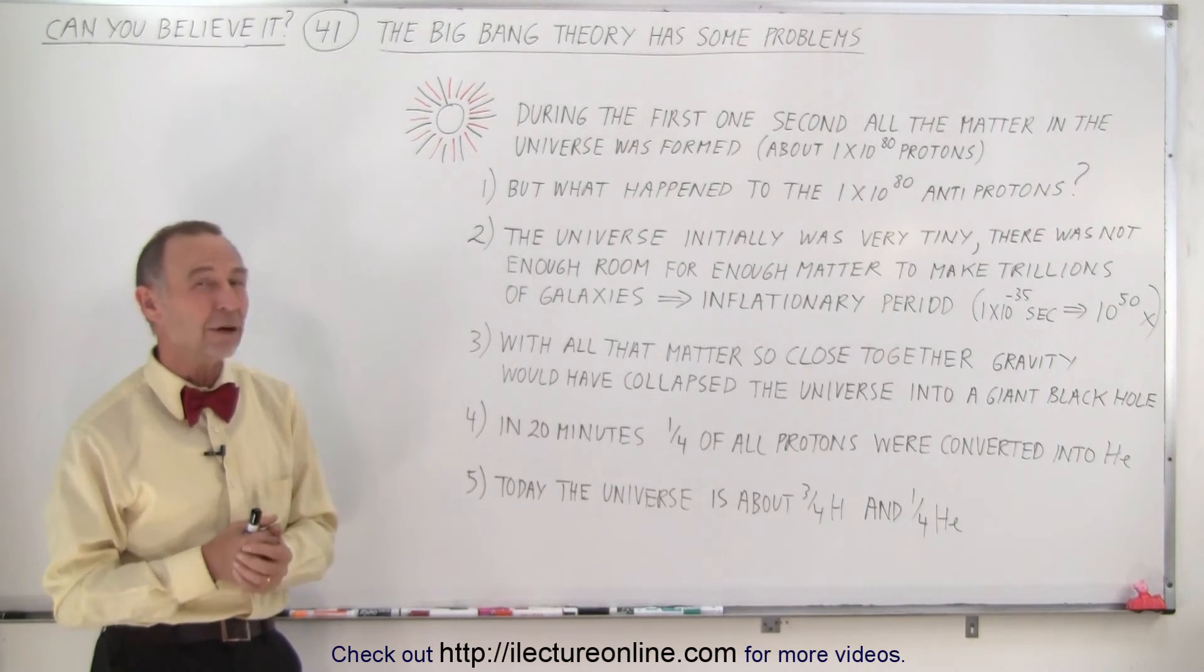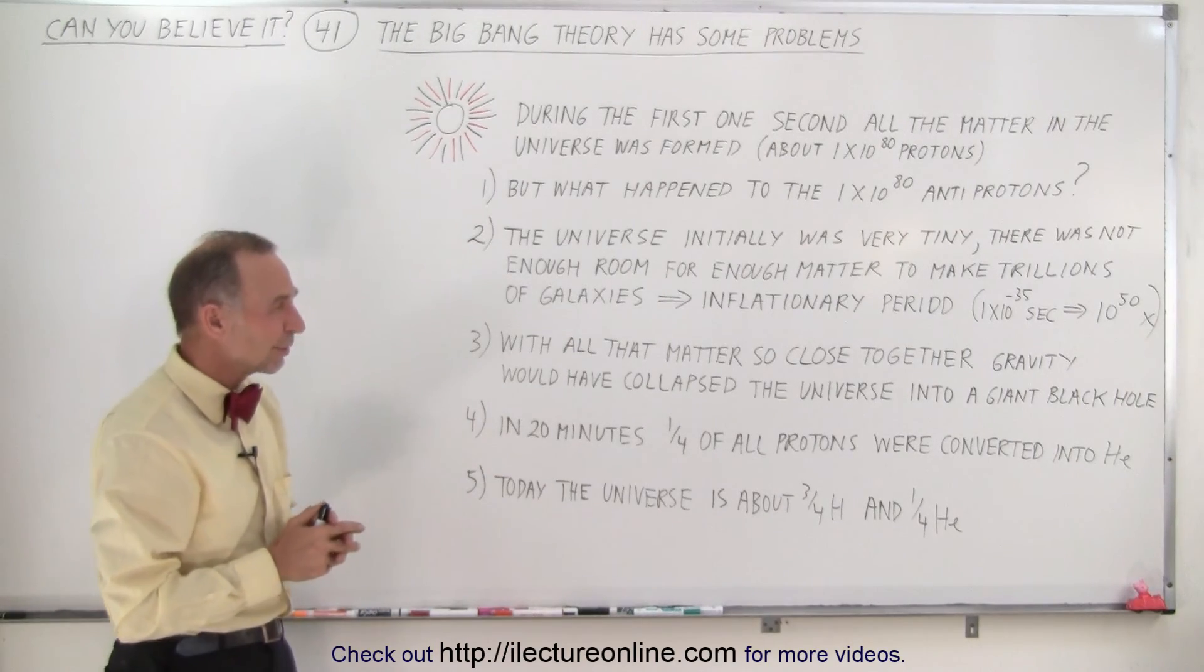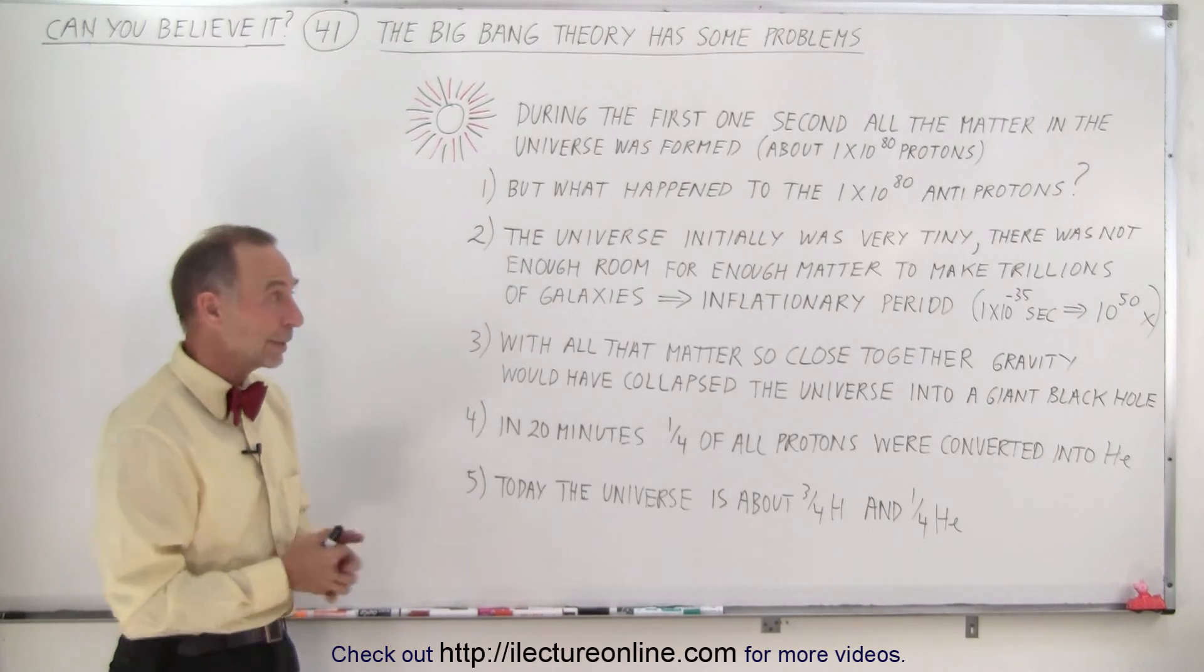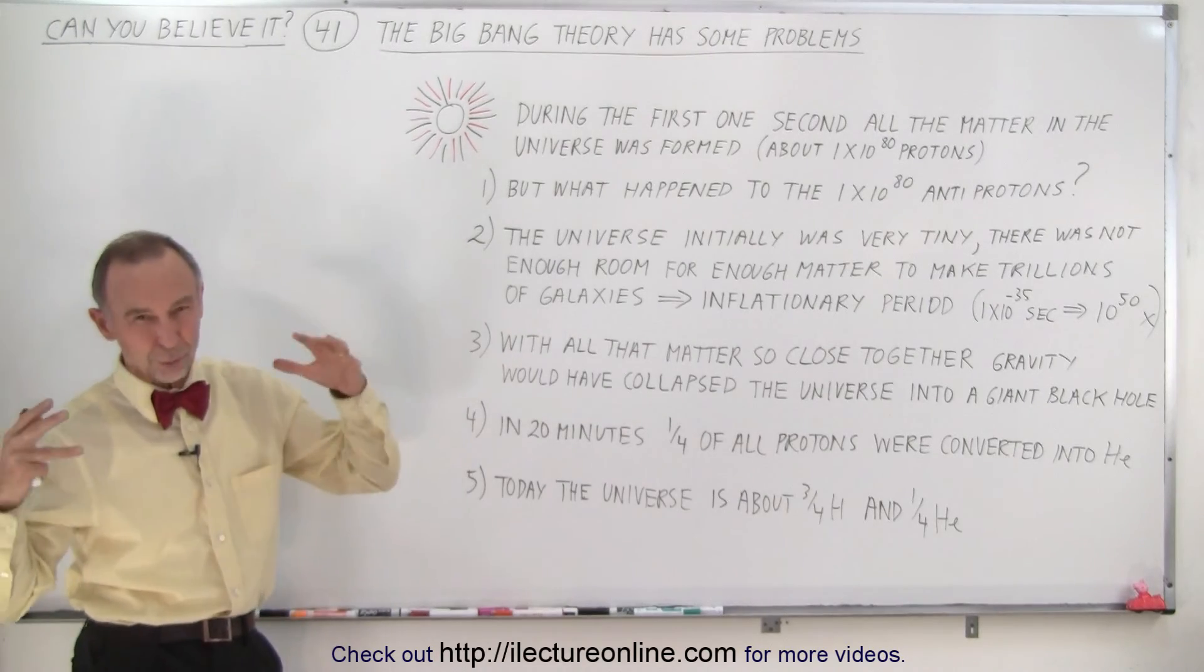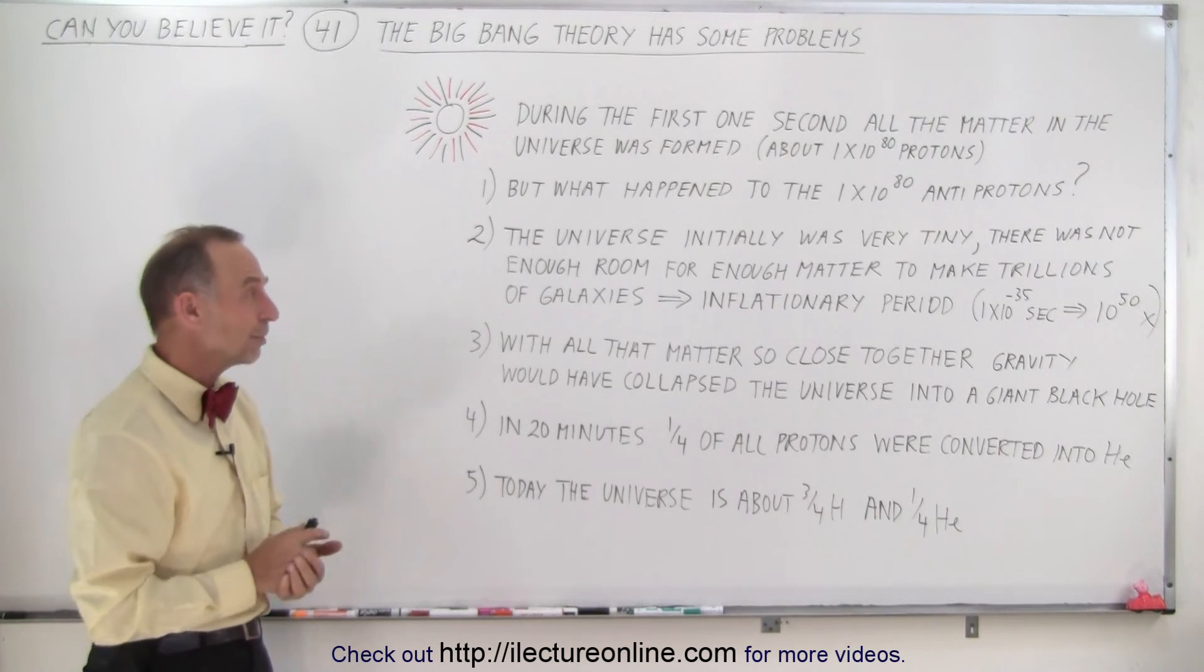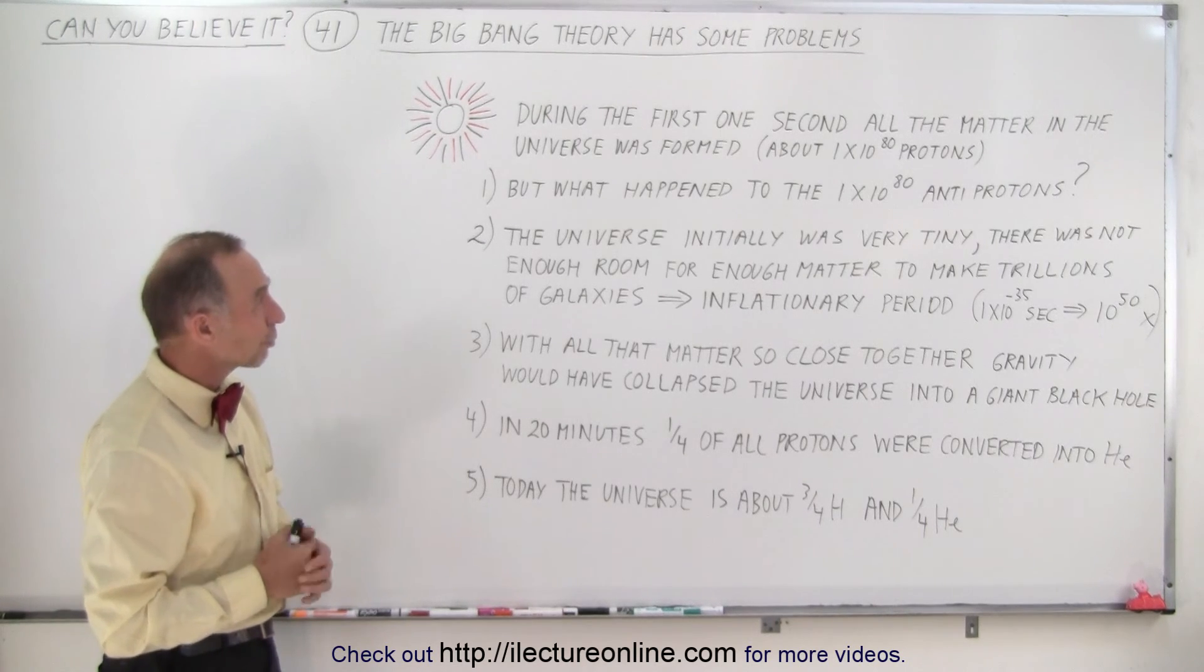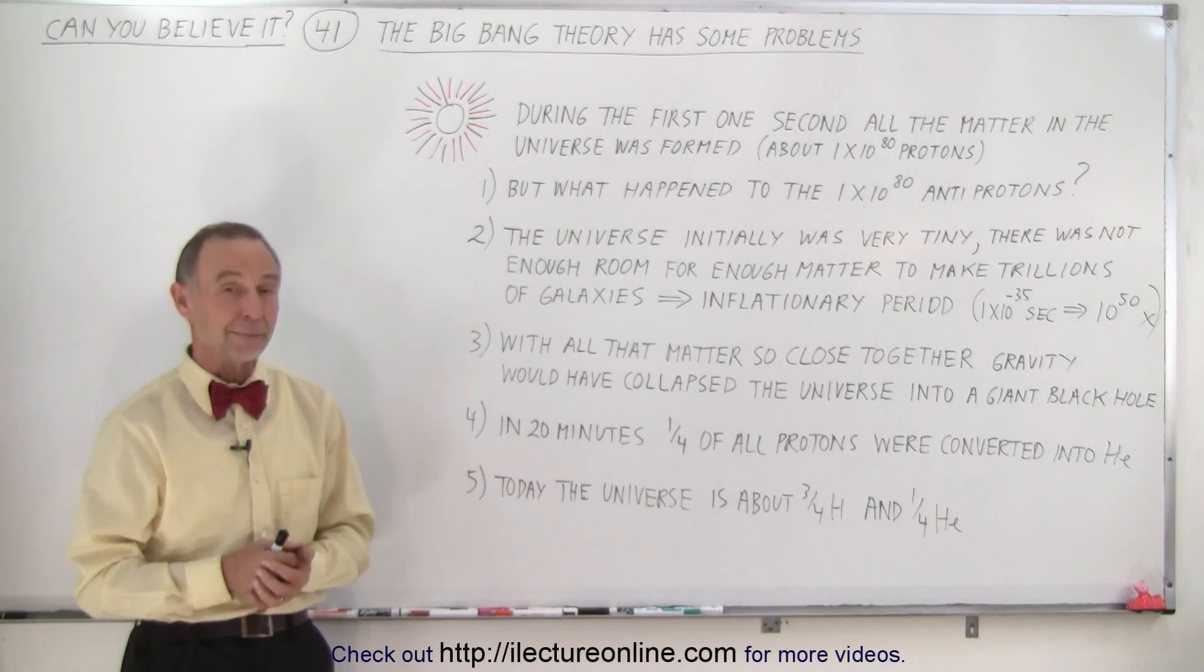Again, it seems kind of odd that we have to explain all these magical events with theories that we really don't understand to try and come up with a way of explaining why the universe even exists. But that's the theory, at least the very initial part of the theory, and of course not all of it. It's much more complicated and much more detailed than that, but at least it gives us a good overview that yes, we do have some very strong problems with the theory, with the Big Bang theory, to try and explain how we got here in the first place. And that is a look at the Big Bang.